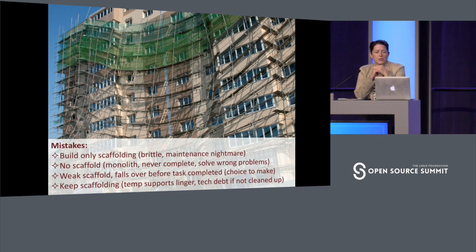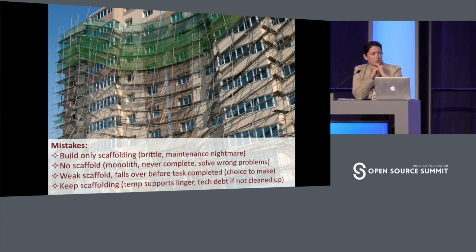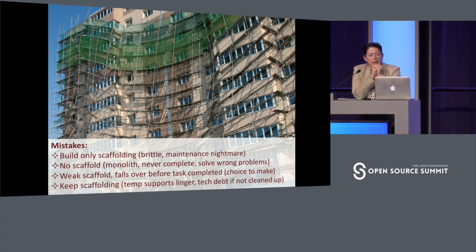There are common mistakes that projects make, and I'll quickly cover them. Mistake one: you can choose to only build scaffolding. This means you're hacking around, it doesn't scale, and it becomes a rickety and demoralizing mess — avoid this. Mistake two: no scaffolding. You're never trying to unblock teams and have them work in tandem; it's always serial. You're working on building the monolithic thing, and you may never complete it, or it's so late that the requirements changed and you didn't solve the new problems.